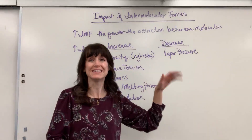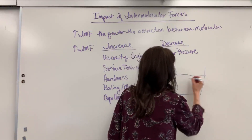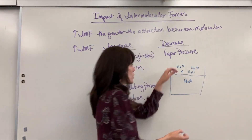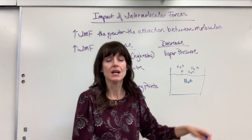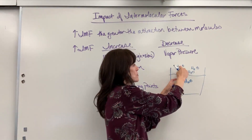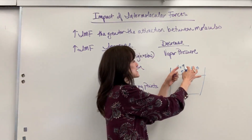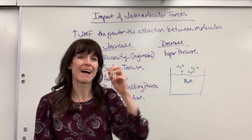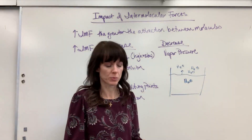Now, as you increase intermolecular forces, you decrease vapor pressure. Vapor pressure is when you have a liquid substance, like water, and it evaporates — those gas molecules pushing back down against the liquid, that's vapor pressure. If you have strong intermolecular forces, there's a greater ability to attract the molecules, so fewer molecules will evaporate, giving you a lower vapor pressure. A high vapor pressure means low IMF — the molecules easily change phase to a gas. So the greater the intermolecular forces, the more likely that substance will stay as a liquid, meaning fewer molecules as gases and a lower vapor pressure.